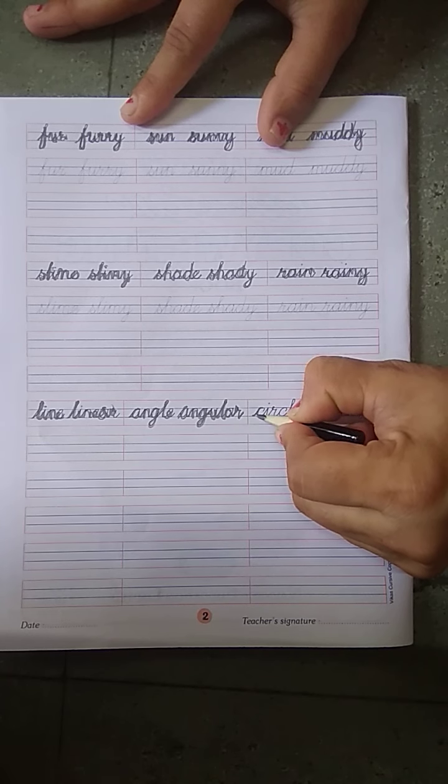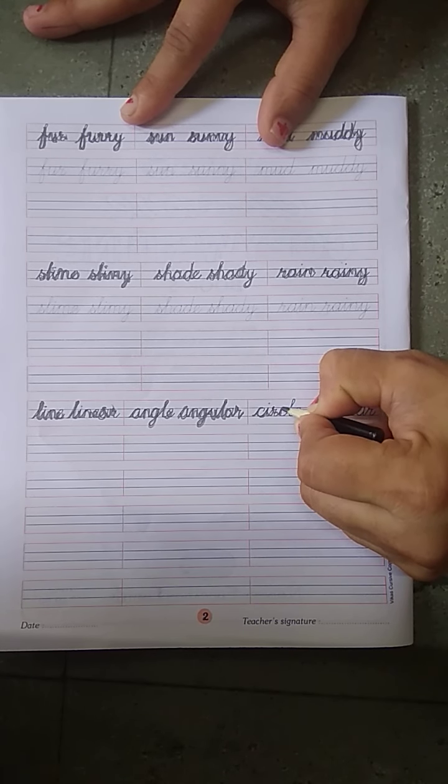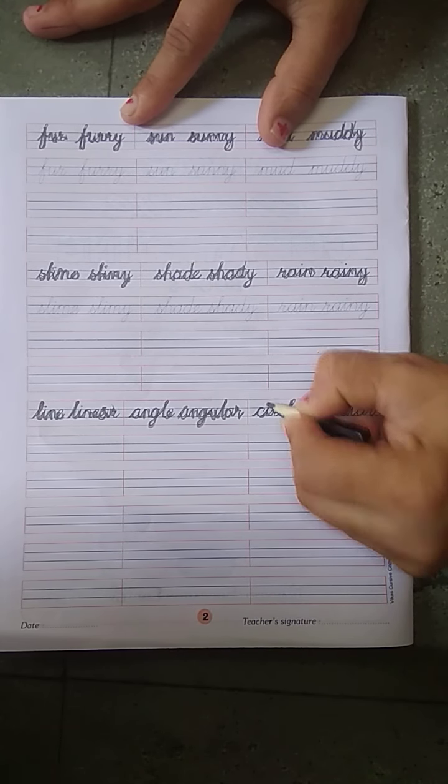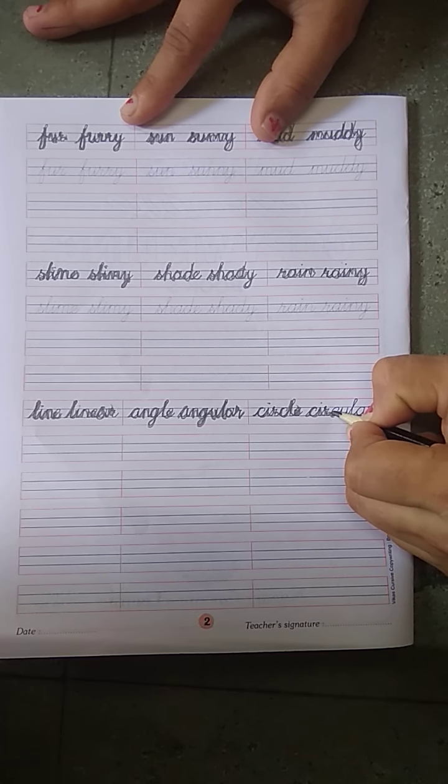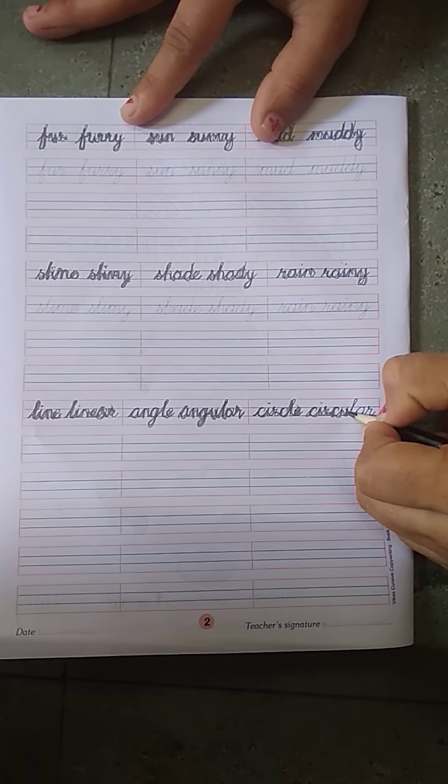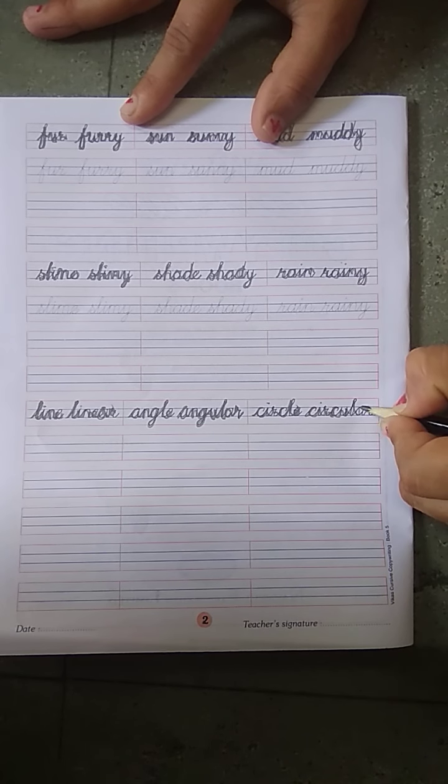Then C, I, R, C, L, E. Circle. Then C, I, R, C, U, L, A, R. Circular.